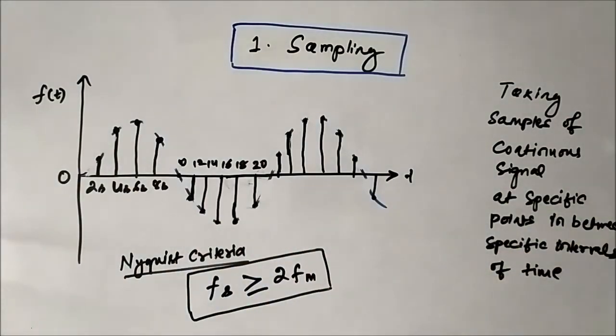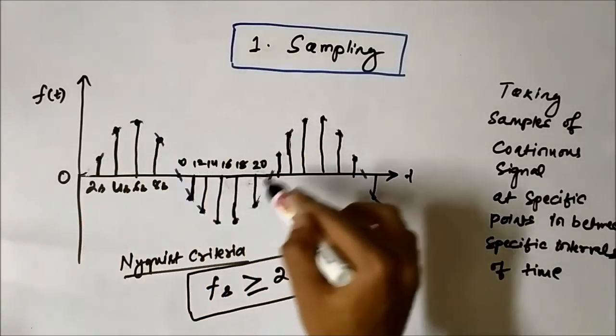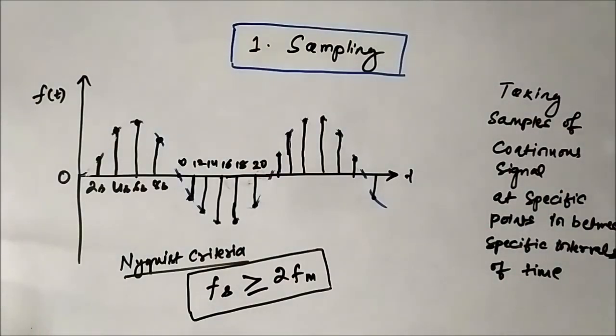Then the process of quantization and encoding follows, to convert this continuous signal into a pulse-type signal. That we will discuss in a separate video.